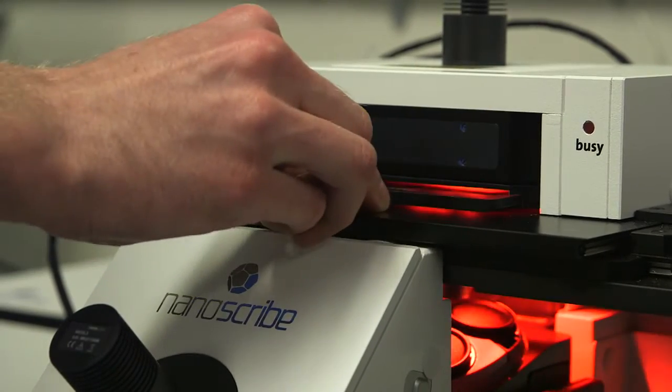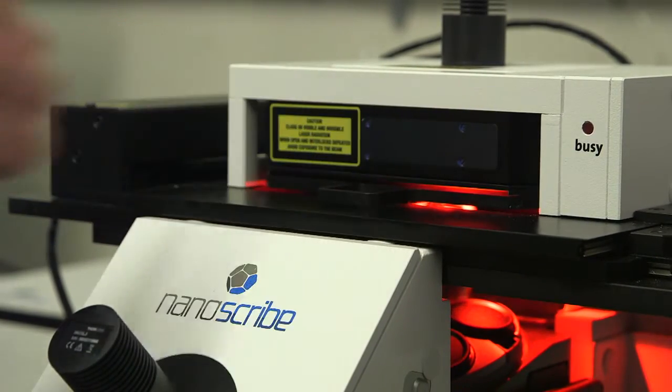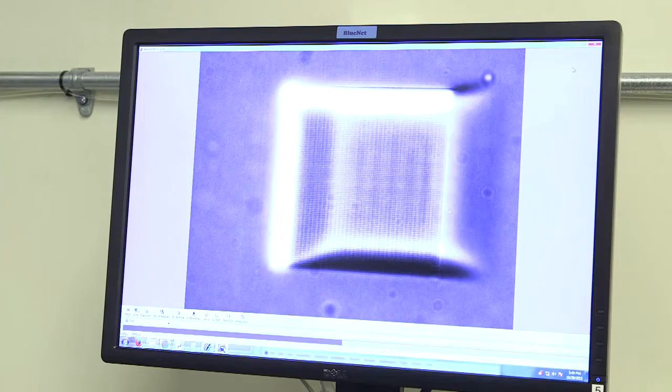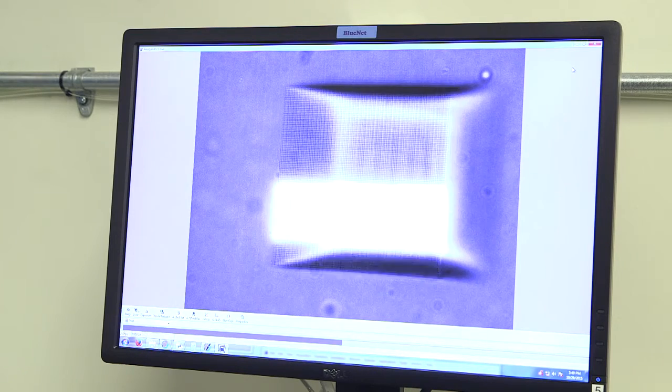Here we use two-photon polymerization direct laser writing, which uses a tightly focused laser to locally polymerize a resin, and by moving the laser focus, you can write a structure.